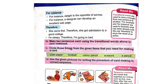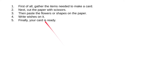Circle those things from the given items that you need for making a card. We need plain paper, color pencil, scissors, and a pencil. Now we have to write the procedure of making a card. First of all, gather the items needed to make a card. Next, cut the paper with scissors. Then paste the flowers or shapes on the paper. Write wishes on it. And finally, your card is ready.